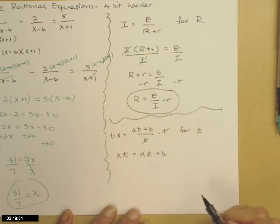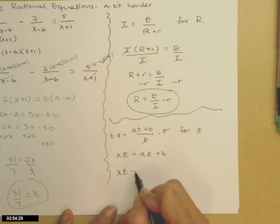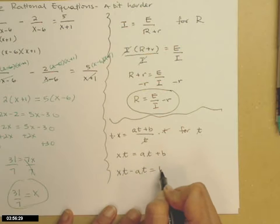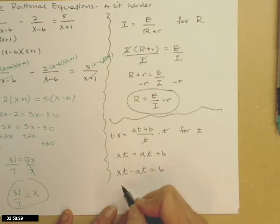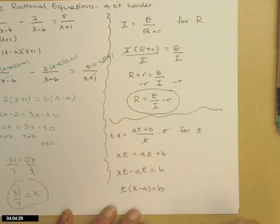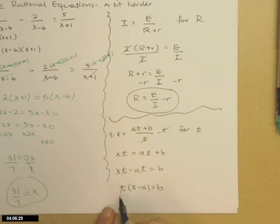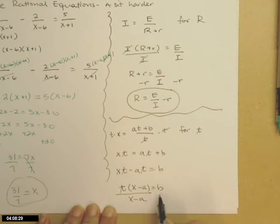Now I have two terms that have that t in it. I need to get those together on the same side. So subtract a t from both sides. Now factor that t out of those two terms. So I'll get t times x minus a. And then finish by dividing both sides by x minus a.